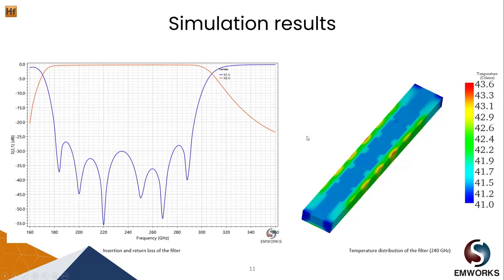Studying the temperature distribution is important especially in terahertz. During filter operation, conductor and dielectric losses can be converted into heat. Since losses at terahertz can be significantly high, it is important to study the temperature distribution. Looking at the temperature distribution shown, the maximum temperature the filter reaches is 43 degrees Celsius, which is still safe and within standard limits.